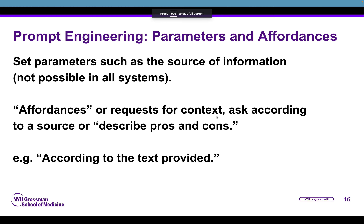Jumping in where we left off, one thing that can be really helpful is to think about considering parameters and affordances. By affordances and parameters we basically just mean features such as context. Parameters might mean providing information on the source of the information that is going to be analyzed — for example, according to the text provided, or according to some other source that we're uploading to the AI. Affordances can be providing additional context, such as describing pros and cons within our project.